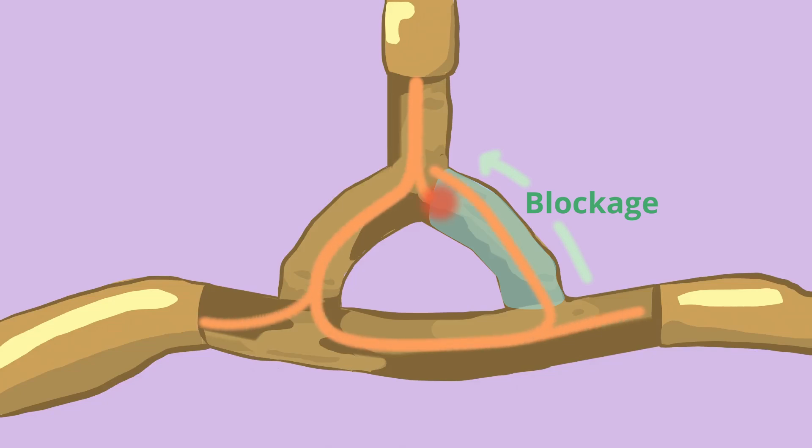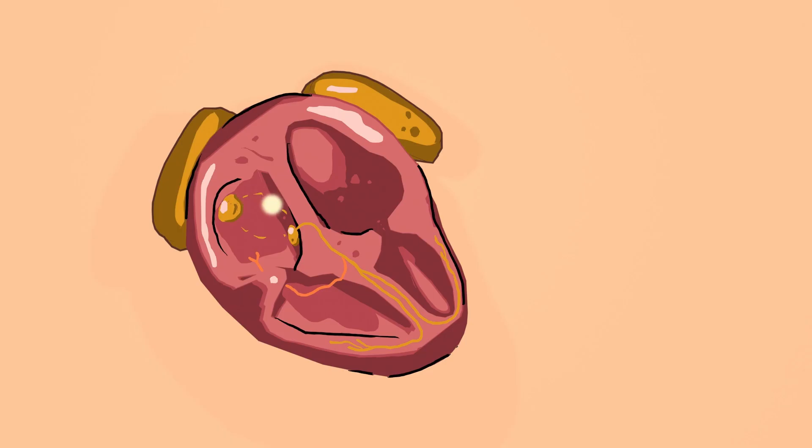And if this is the case then the action potential will travel through the loop and re-excite the tissue at the top. But the tissue of course needs to be in a repolarized state.